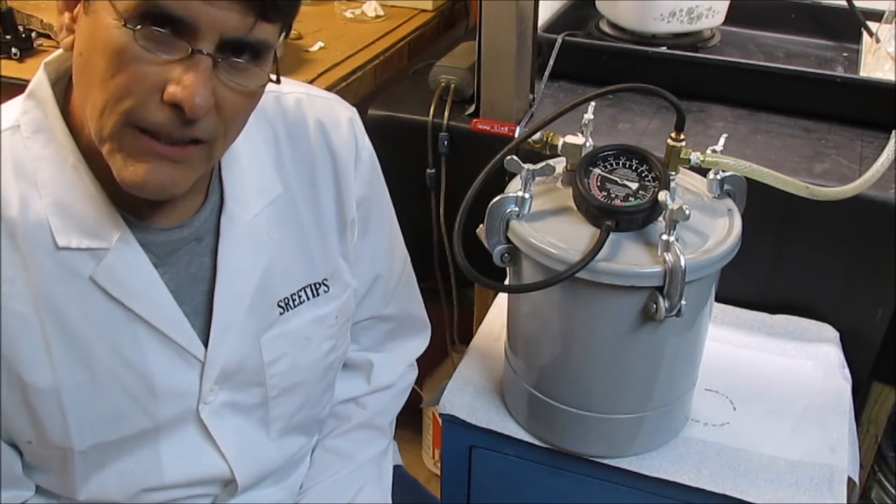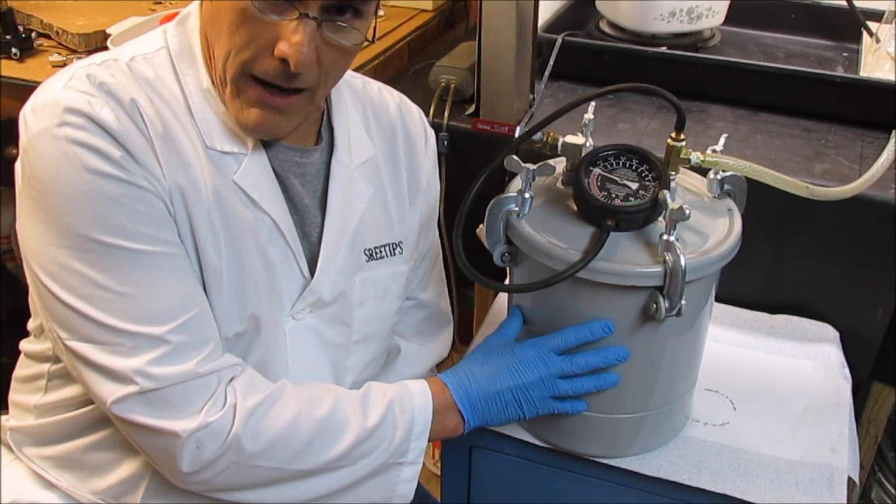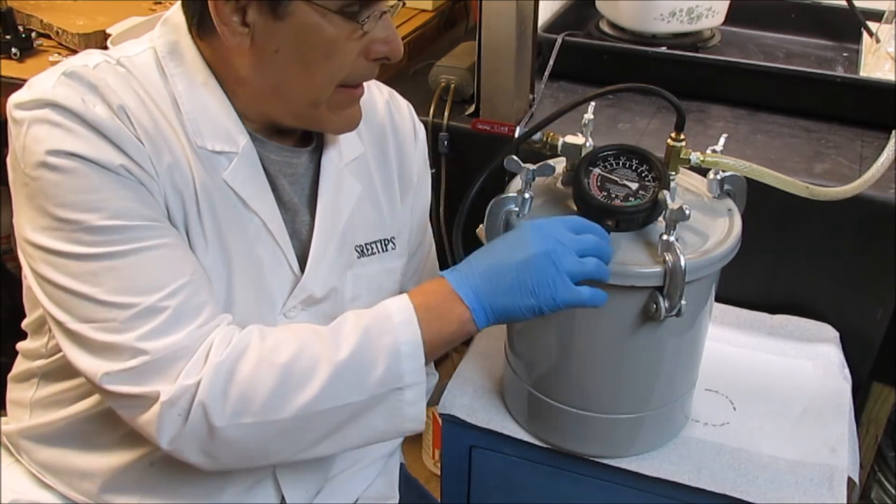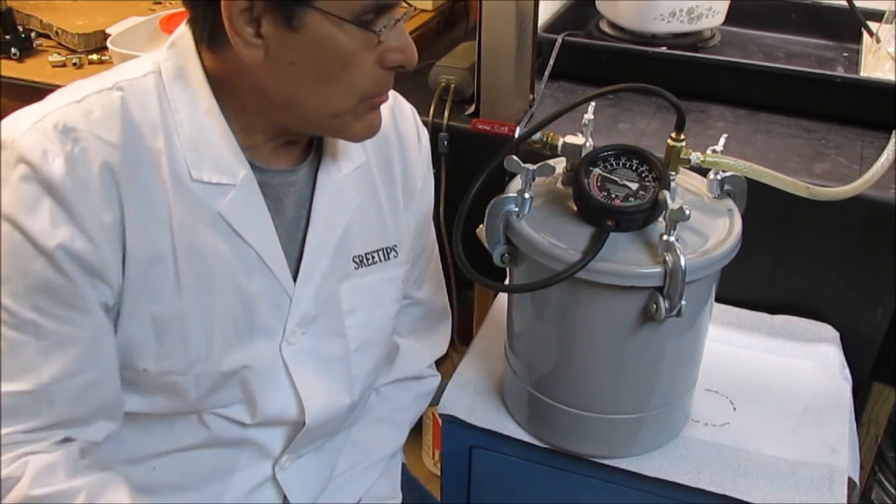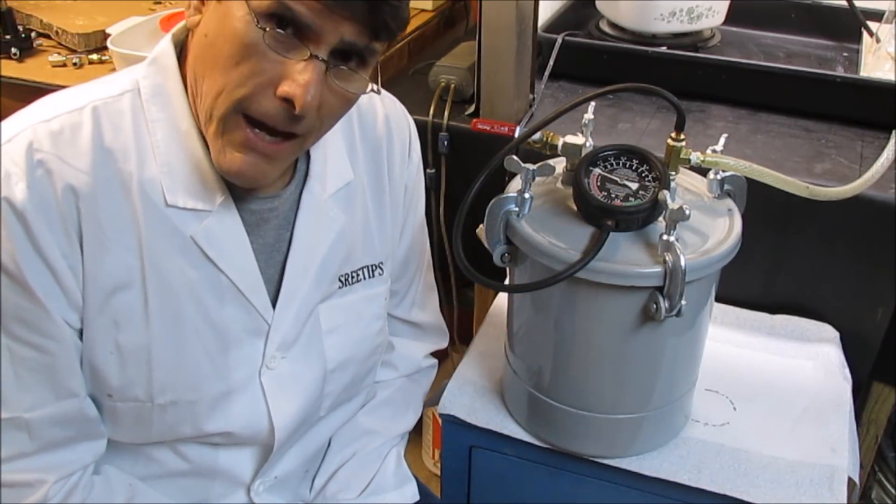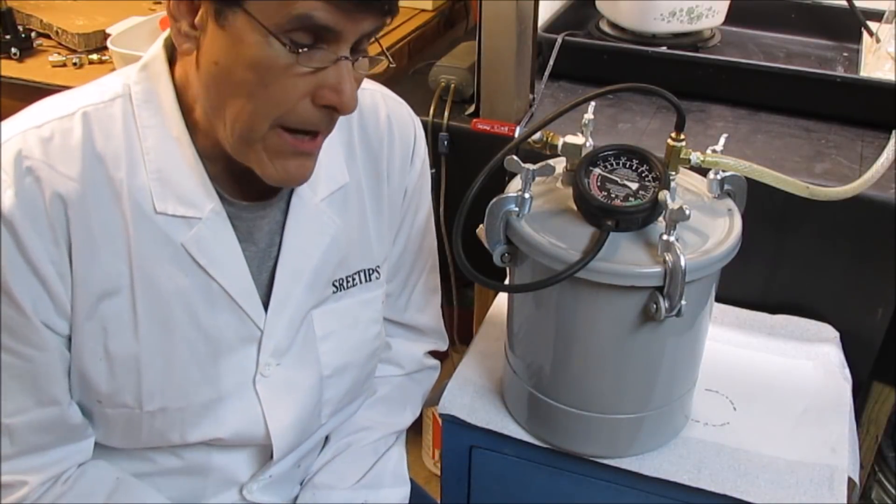Well, that was a successful test of my vacuum chamber here. Took a paint pot from Harbor Freight. It was $99. And I added the fittings and put this gauge on here for my vacuum table and a ball valve. And made a nice vacuum chamber here so that I can degas the molds that I'm going to make.